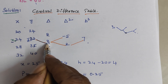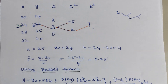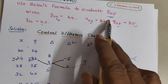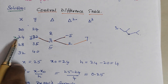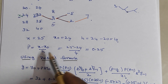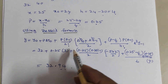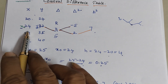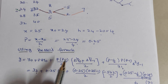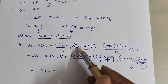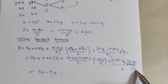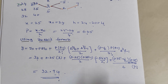We mark y0 down. P equals x minus x0 by h. x = 25, x0 = 24, h = 4 (difference: 24 minus 20 = 4). So p = 0.25. Now substituting into Bessel's formula: y0 = 32, delta y0 = 3, delta y minus 1 = 8, so average is minus 5 plus 2 by 2. We have 7 as the third-difference value. Substitute and calculate the answer.